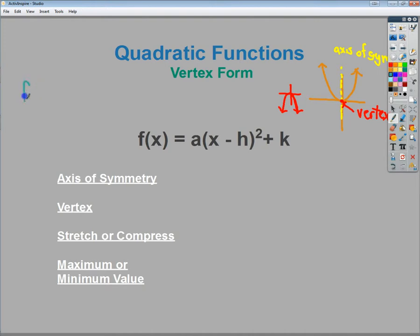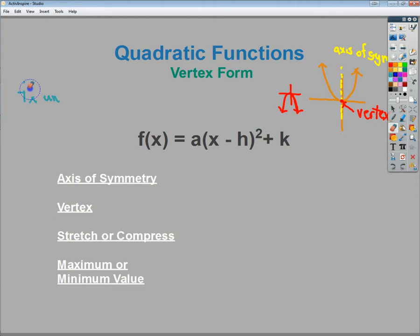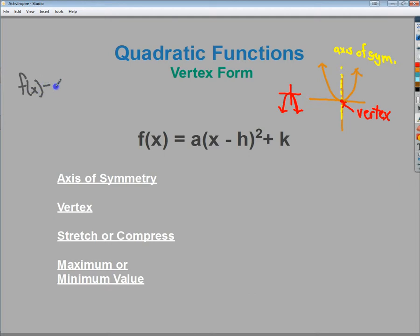f of x and x would just be my output and input variables. So f of x would be my output whereas x would be my input. They really don't tell me anything about the graph other than I can plug one in and get the other. So it just tells me it's a function, basically.